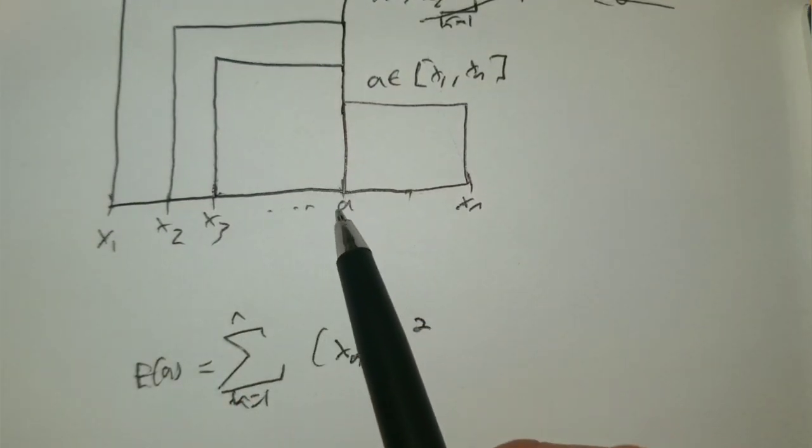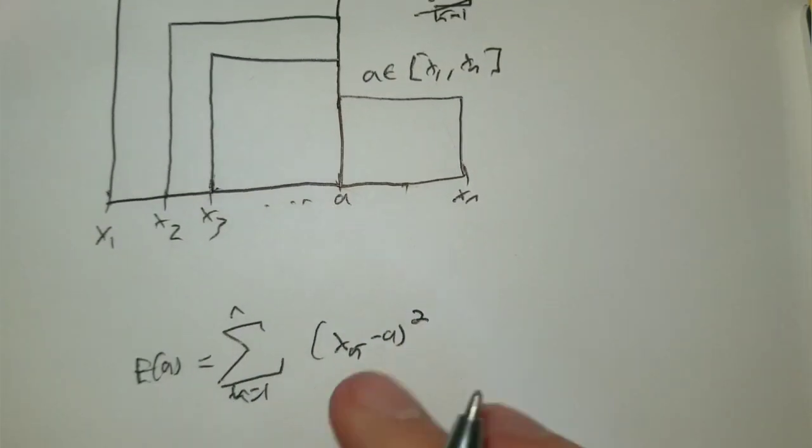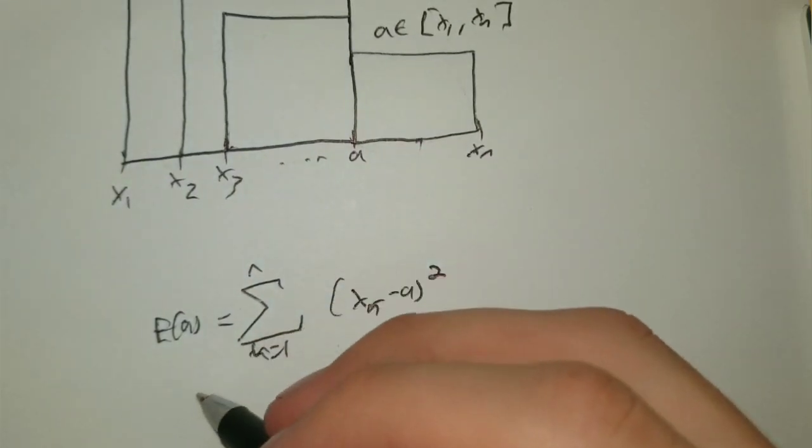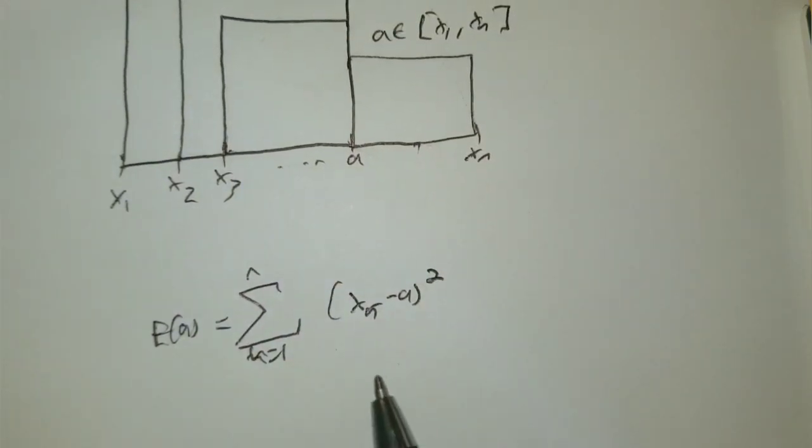In this case we can only choose a. Thereby this series is a function of a. As a varies, the series varies. So we'll have to take the derivative and set it to zero.